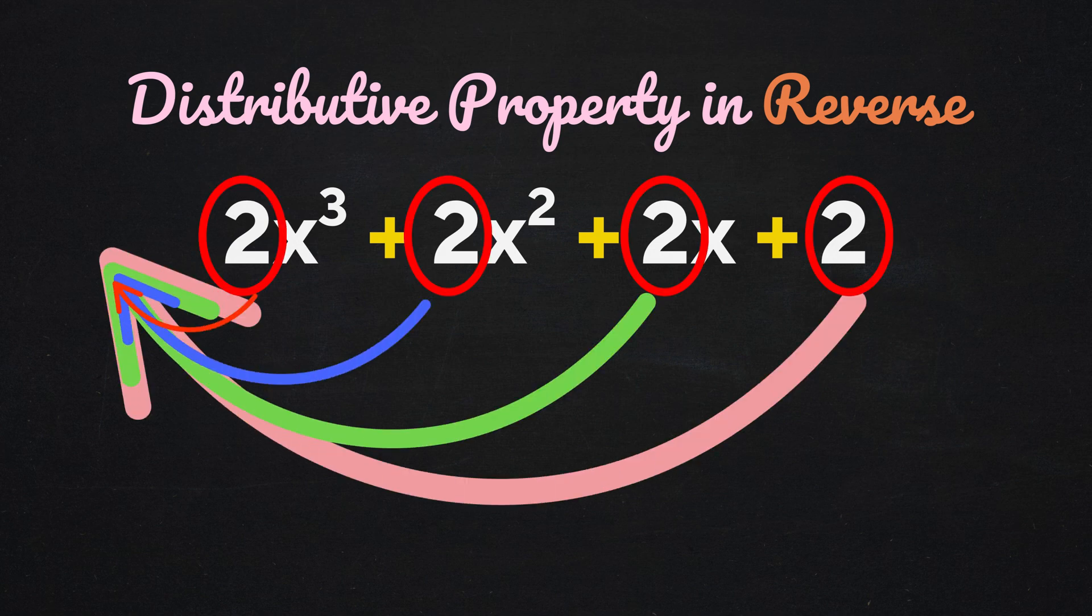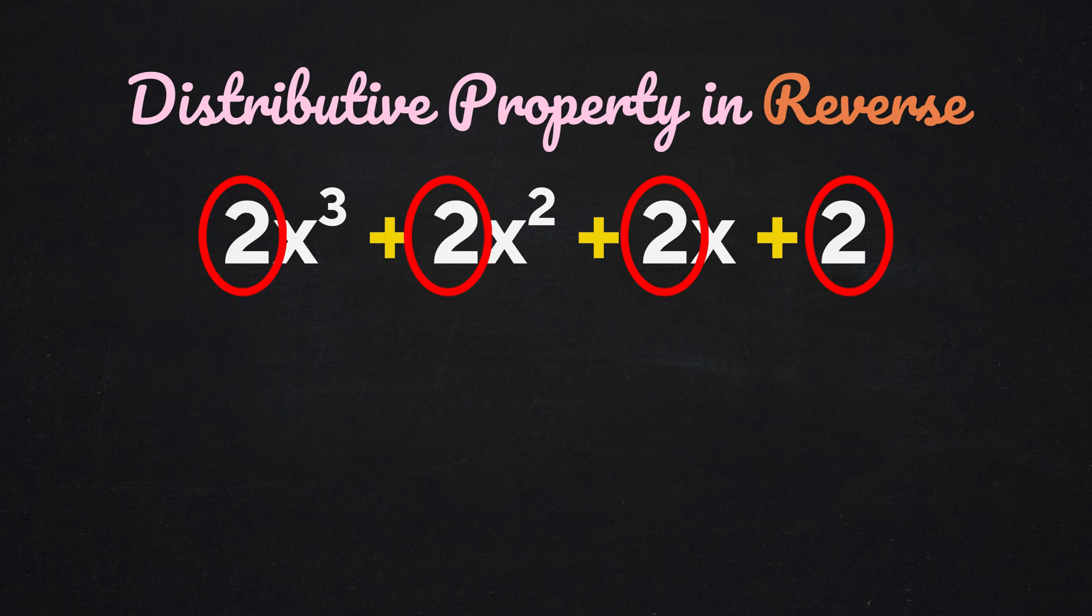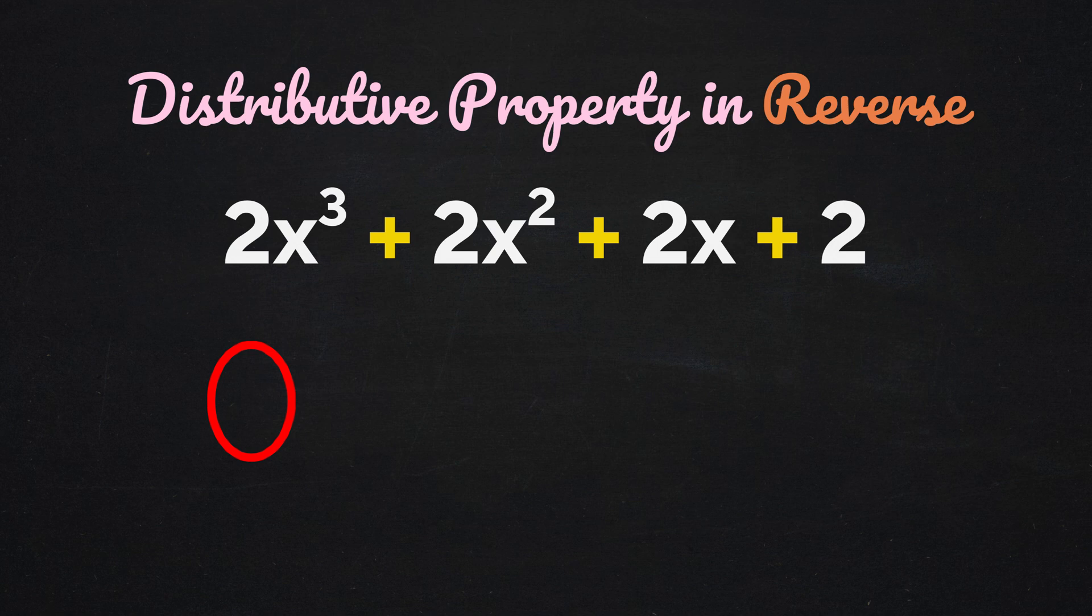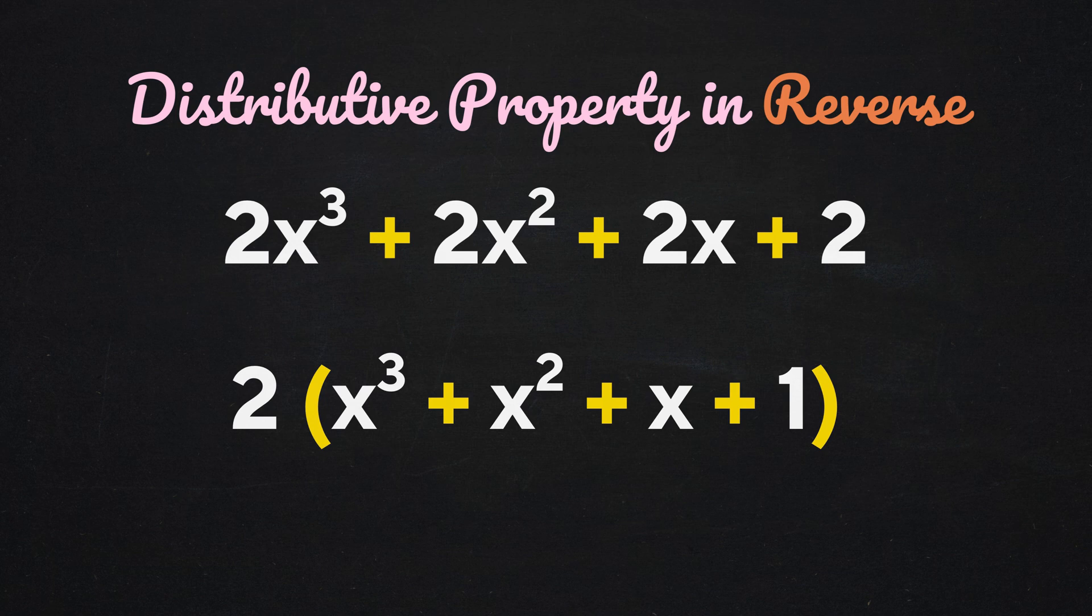To reverse the process, we can factor out the 2, which means we group all the terms and multiply by 2. So the expression becomes 2 multiplied by the group of x cubed plus x squared plus x plus 1. See, you can use the distributive property both ways.